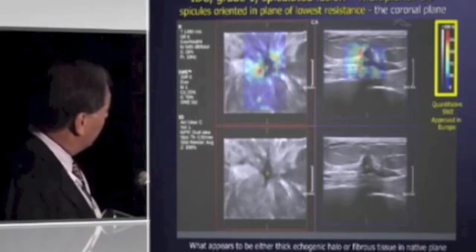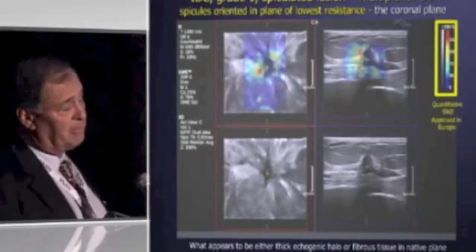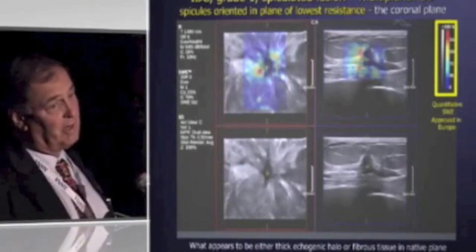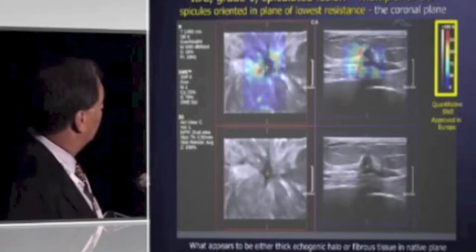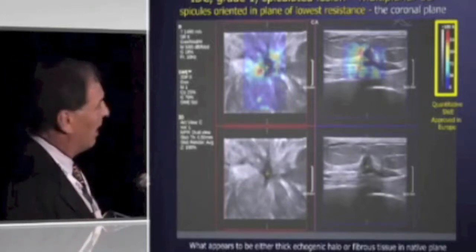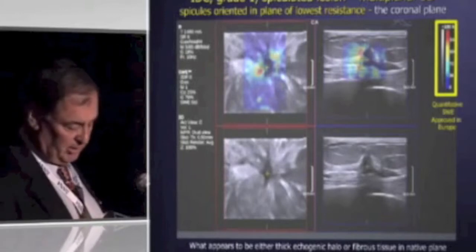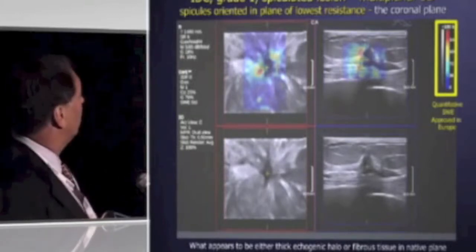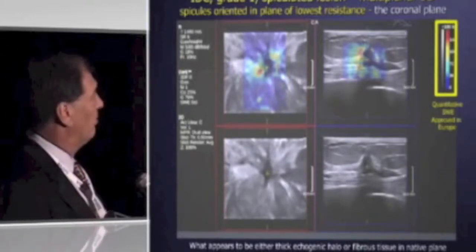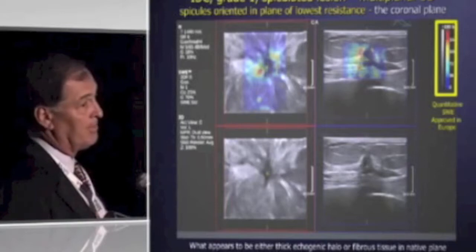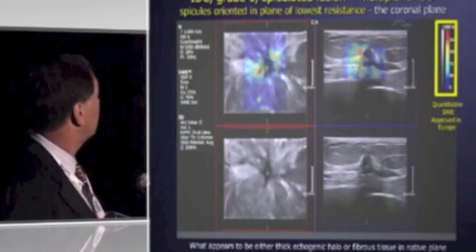What we see is that what looks like a thick echogenic halo — and in some cases it's even hard to tell whether it's just fibrous tissue surrounding the lesion — can be resolved into obvious spiculations in the coronal plane. So the coronal plane in a stellate lesion upgrades things from BI-RADS 4A, and sometimes even 3, to 5 in many cases.